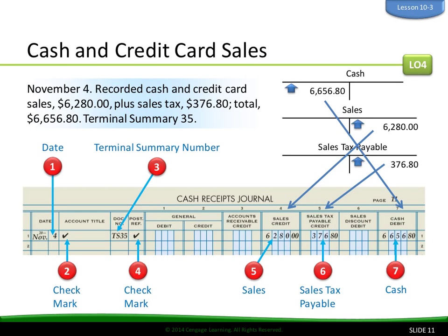Looking at cash and credit card sales. On November 4th, we recorded cash and credit card sales of $6,280 plus sales tax for a total of $6,656.80. The terminal summary number is TS35. We have the cash, which is a debit, and the sales credit plus the sales tax payable credit — so sales credit plus sales tax equals cash debit. The account title gets a checkmark, and the date is given.